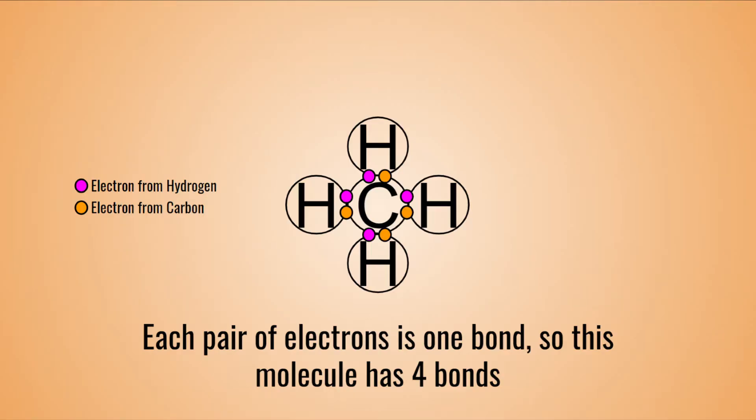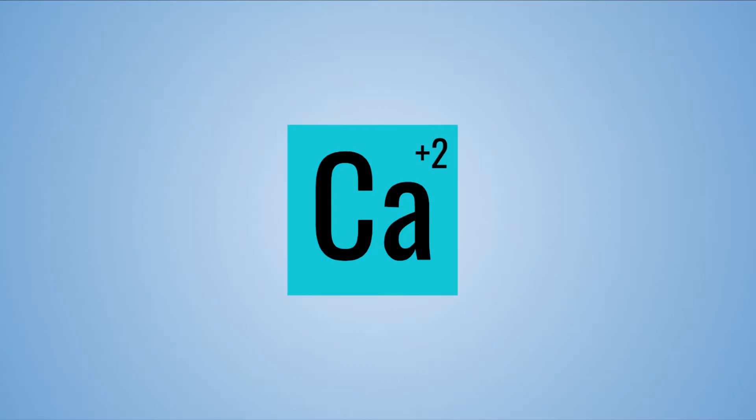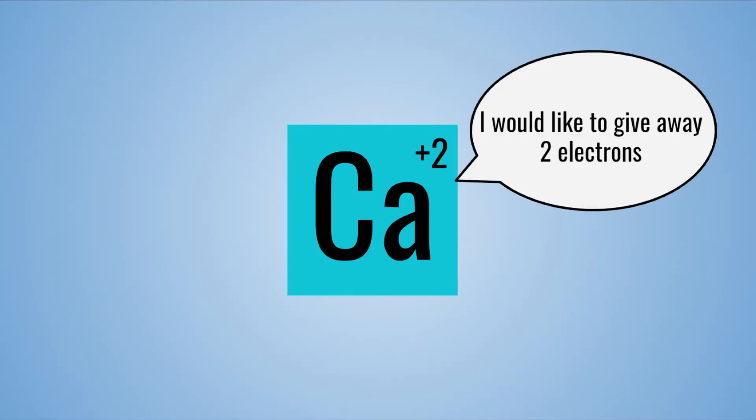Simply, it is a connection between two or more atoms, and it is all dependent on electrons. This is what the charge or oxidation state of an atom refers to. Take calcium, which has a charge of plus two. This means that it wants to give away two electrons to a separate atom.